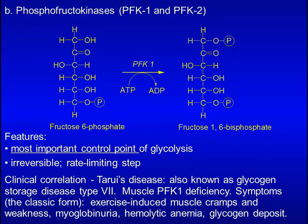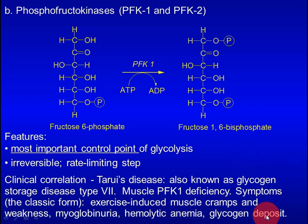The second phosphorylation reaction is catalyzed by PFK1, or phosphofructokinase-1. This is the most important control point of glycolysis. Tarui's disease is caused by deficiency of muscle PFK1. Patients cannot utilize glycogen in the muscle. Since glycolysis is a very important energy source during exercise, PFK1 deficiency leads to exercise-induced muscle cramps and weakness, hemolytic anemia, and glycogen deposits.